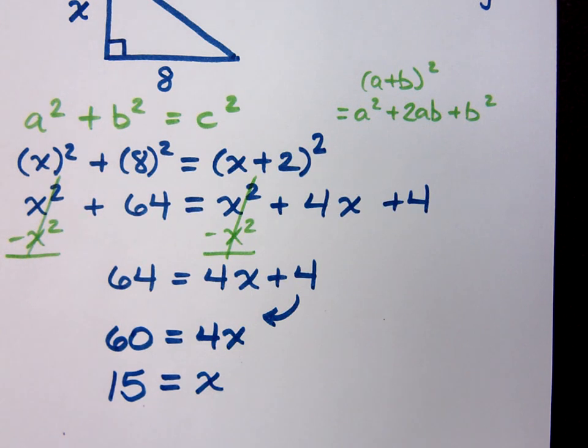So do I box this? No, I've got to make sure that I answer the question. The question says, how long is the hypotenuse? So we can say the hypotenuse is 15, right? No. Plus 2.